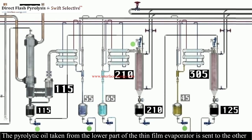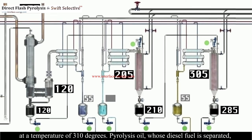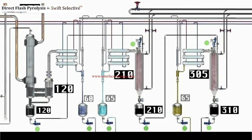The pyrolytic oil taken from the lower part of the thin film evaporator is sent to another thin film evaporator, where diesel fuel is separated from the content of the pyrolytic oil at a temperature of 310 degrees. Pyrolysis oil, whose diesel fuel is separated, is taken from the thin film evaporator bottom as fuel oil.